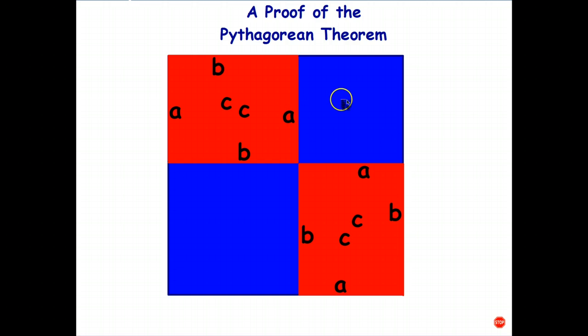Well, we have a square up here that's A squared. We have a square down here that's B squared, B times B. And therefore, it's just going to be A squared plus B squared.